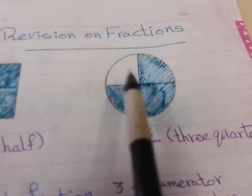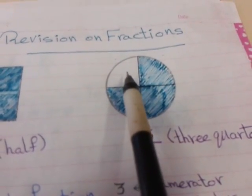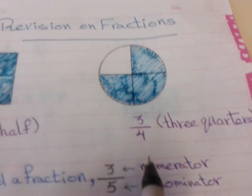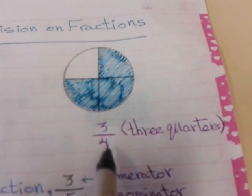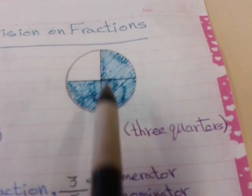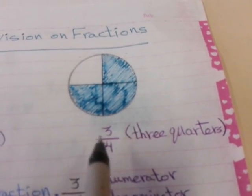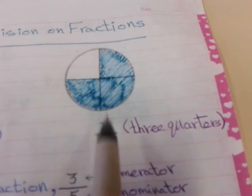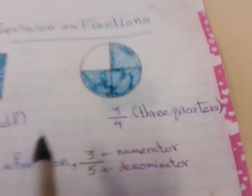Here we have circles. How many parts? 1, 2, 3, 4. We will write 4 down. And how many colored parts? 1, 2, 3. We will write 3 up. And it's called 3 quarters.